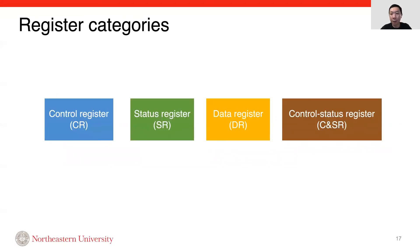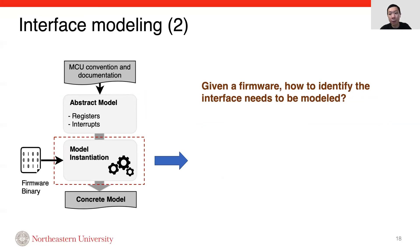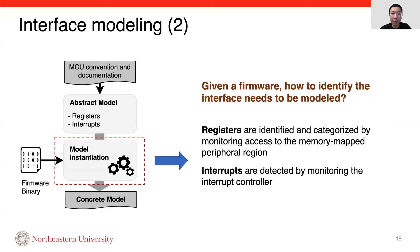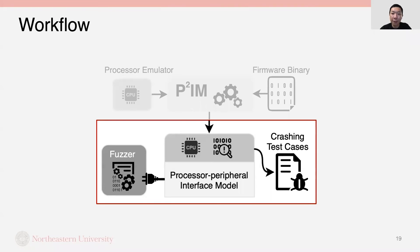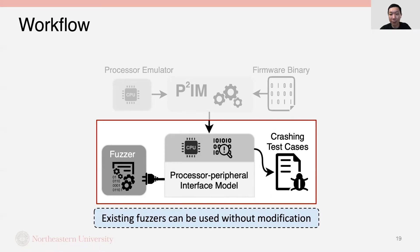This slide shows the four register categories we define. After thoroughly analyzing MCU convention and documentation, we believe these four categories are representative and comprehensive, which is confirmed by our evaluation. Given a firmware, registers used are identified and categorized by monitoring access to the memory map's peripheral region. For interrupts, they are detected by monitoring the interrupt controller. This is an automated process per firmware. After modeling the interface, the firmware can run in the emulator, and the next step is to do fuzzing. We integrate existing fuzzers without any modification. The inputs generated by fuzzers are fed into the firmware through the data register, and crashing test cases are stored for further analysis to find bugs.